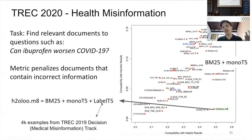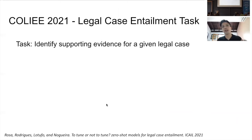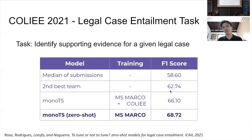MonoT5 ranks documents while label T5 decides whether to show them to the user. Finally, in COLIEE 2021's legal case entailment task — identifying supporting evidence for a given legal case — MonoT5 trained on MS MARCO gave us first place, well above the second-best team. Interestingly, fine-tuning on the training data actually produced worse performance on the held-out test set, indicating overfitting. The training and test data had different distributions, yet zero-shot still put us in first place.